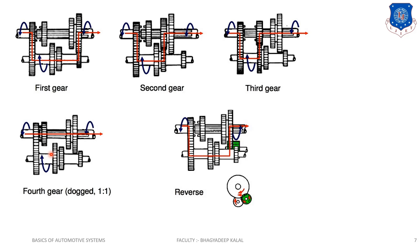For reverse gear, the idler gear is applied. Power comes to the lay shaft and transmits to one more shaft on which the idler gear is used. This idler gear changes the direction of rotation, and then it transmits to the main shaft gears. So that gives us a total of four gears plus one reverse gear. That is the function and working of the sliding mesh gearbox.